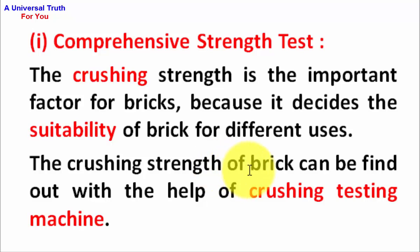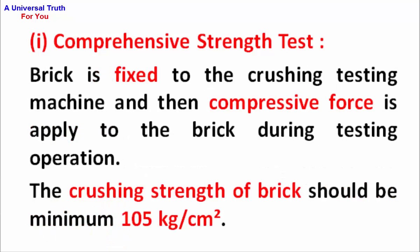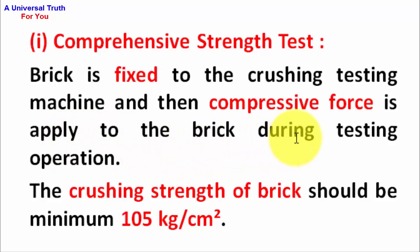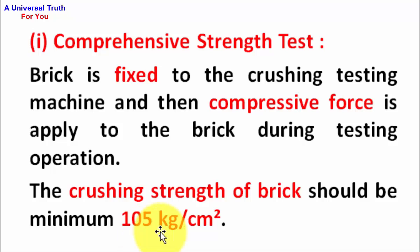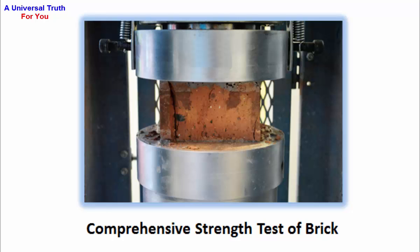The crushing strength of brick can be found out with the help of a crushing testing machine. The brick is fixed to the crushing testing machine and then compressive force is applied to the brick during the testing operation. The crushing strength of brick should be minimum 105 kg per centimeter square. This is the picture of the compressive strength test of brick.